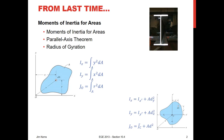Recall from last time, we talked about the moments of inertia for areas — by definition, that's the integral over an area of a distance squared times a differential of area, giving units of length to the fourth. We also talked about the parallel axis theorem: you have the moment of inertia about the centroid, and you want to find the moment of inertia about another axis by adding the area times the distance squared. And we talked about having the maximum area as far away from the centroid as possible to give maximum stiffness.